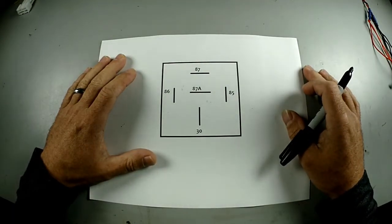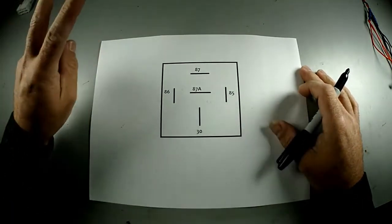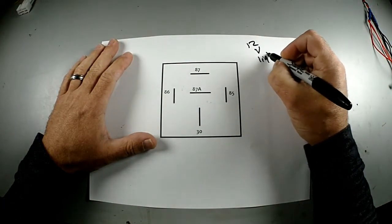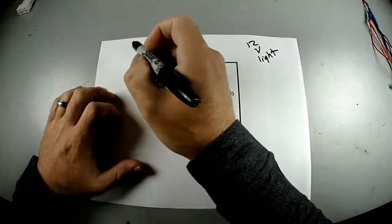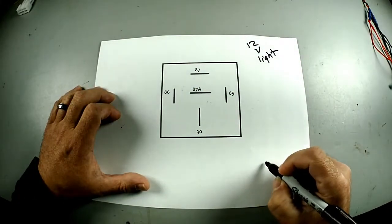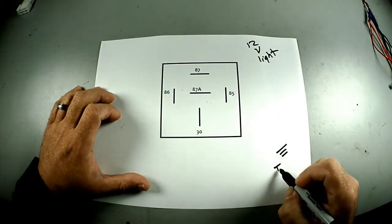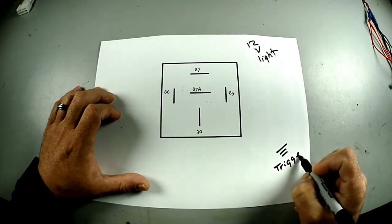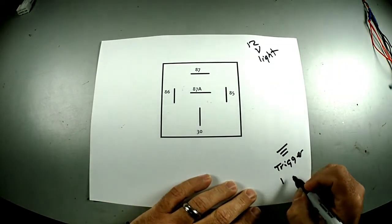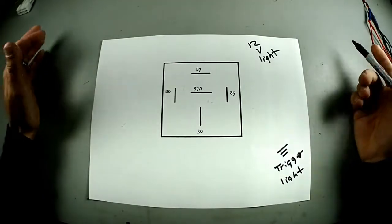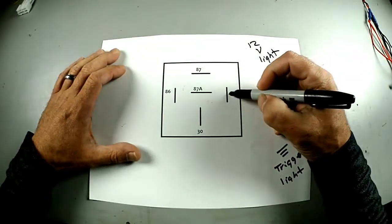Well, we have two wires already. We have 12 volts going to the light and we have a negative trigger triggering the light. So how are we going to do this? Pin 85 is going to go to this negative trigger.